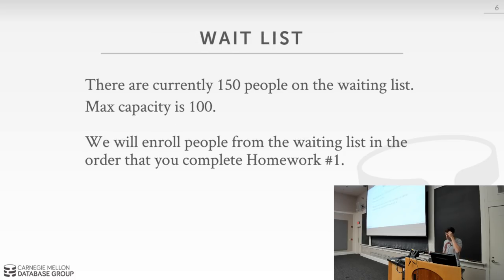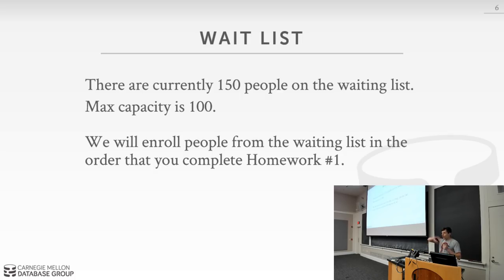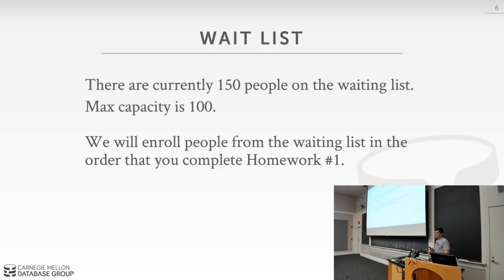The most important thing you probably care about is the waitlist. As of this morning, we're back up to 150 people, and the max capacity is currently around 100. So if you're on the waitlist, I'm sorry, we just can't take everyone. People will drop the course and we'll pull people off the waitlist. We'll assign spots based on the order you complete the first homework assignment with a 100% score — not dealing with what program you're in or when you're graduating. The homework will be on Autolab in SQL, and we'll release it on Wednesday. Autolab keeps track of submission history so we know who submitted first. Everyone on the waitlist will also have access to Autolab when we open it on Wednesday. Bribing the TAs does not work — we got in trouble last year for that.